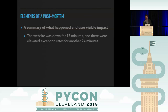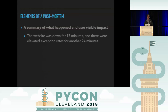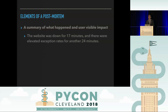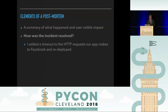First element: a summary of what happened and user-visible impact. For example: 'The website was down for 17 minutes and there were elevated exception rates for another 24 minutes.' Right from the top, you want a crisp description of what the failure was and what the visible impact was. What 'user-visible impact' means varies by your system — if your services' consumers are people's ETL jobs, they are your users, and you care about the impact as they perceive it.